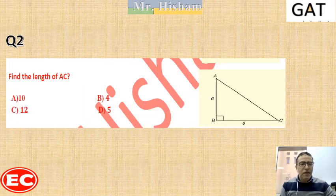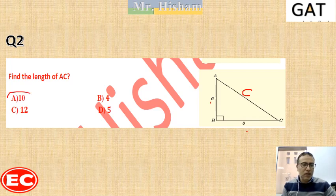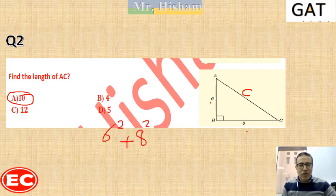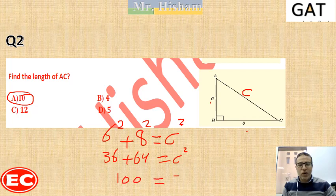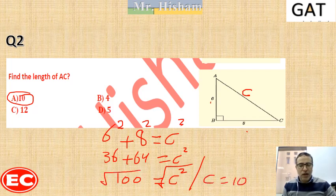Question 2: find the length of AC. AC represents the hypotenuse. The legs are 6 and 8, and from the 6, 8, 10 triple, the answer is 10. Or: 6 squared plus 8 squared equals C squared, so 36 plus 64 equals C squared, giving 100 equals C squared. Taking the square root, C equals 10.